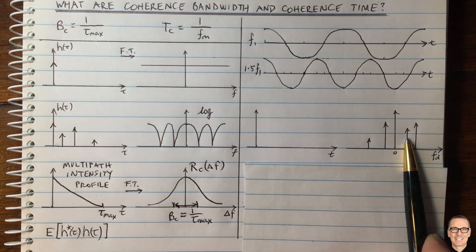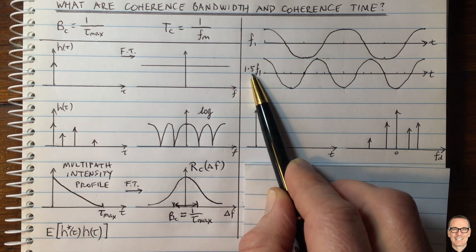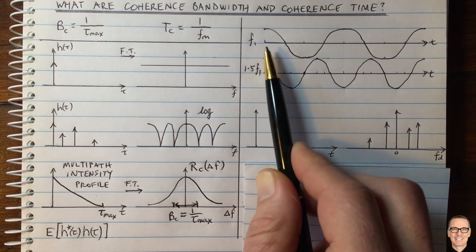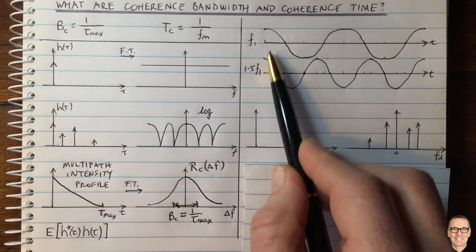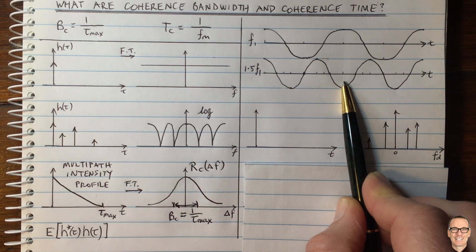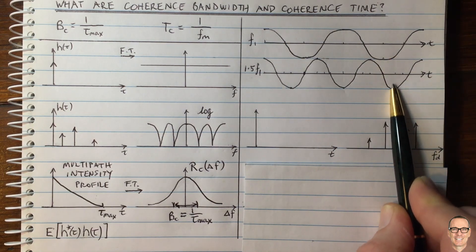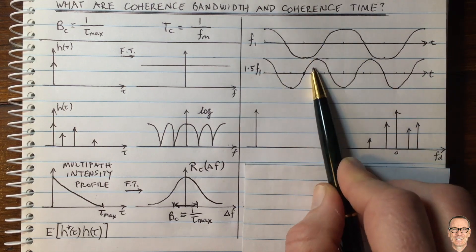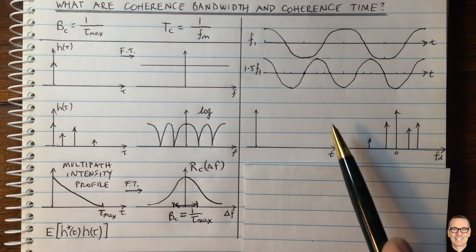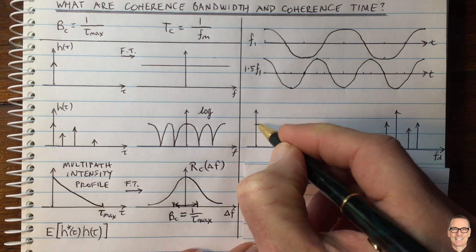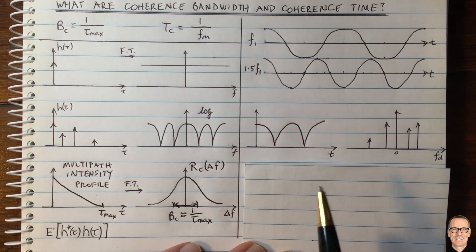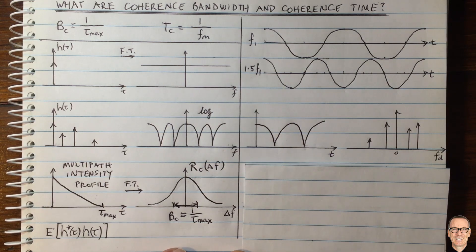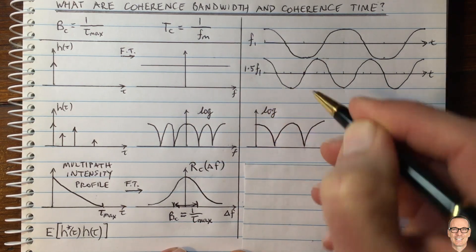Let's think about the impact in the time domain. If there were only two paths — one at f1 and another at 1.5·f1 — we can see the received waveform: at some times they add constructively, at others they cancel each other out, and then add negatively, then constructively again. Simply adding two waveforms together results in the received signal varying as a function of time. This is typically drawn like this, but it can be deceiving because it doesn't mean there are sudden dropouts — this appearance is simply because it's drawn on a log scale.